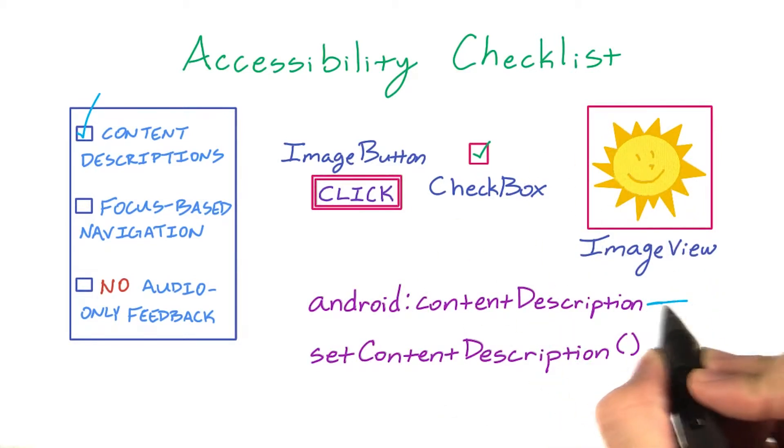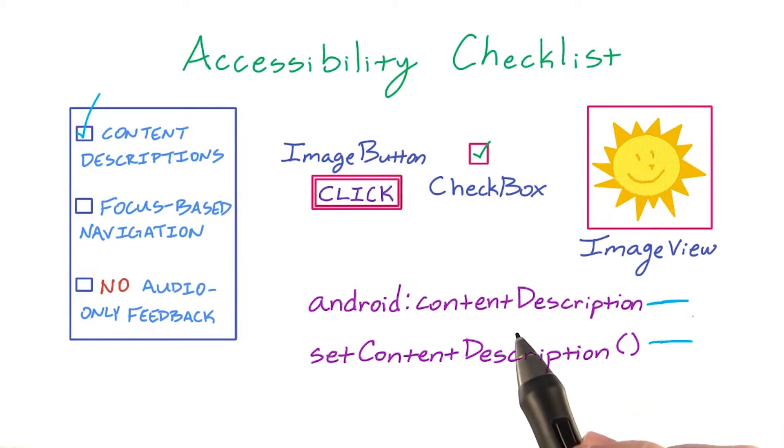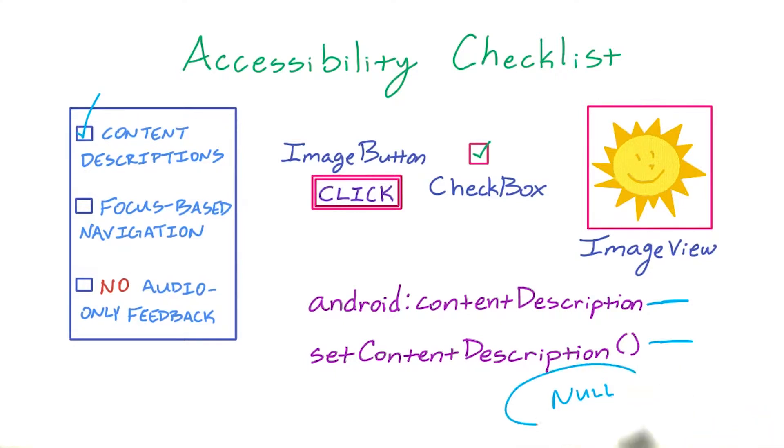Use the Android Content Description layout attribute or the Set Content Description Java method to provide this information for accessibility services. Note, however, that decorative graphics are the exception to this rule. Be sure to indicate this by setting Content Description to null.